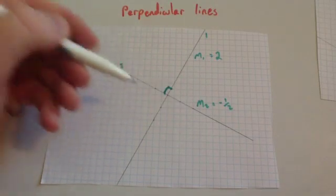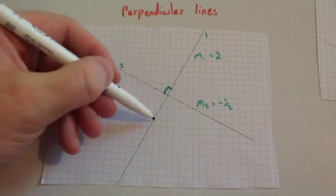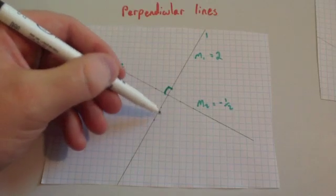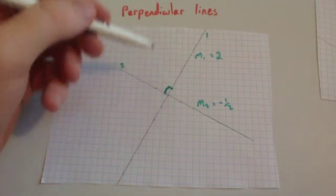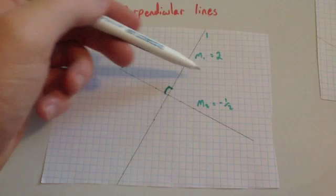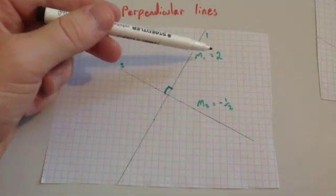For this first line, if you choose a point and you go across one, you go up two — across one, up two. So the gradient of the first line is equal to two.